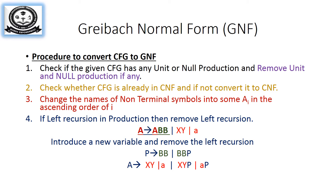Let us see the procedure to convert a context-free grammar into Greibach Normal Form. There are four steps. The first step is the given context-free grammar must be free of null productions and unit productions — if it has either, we must remove them. The second step is to check whether the given CFG is in Chomsky Normal Form (CNF); if not, we must convert it into CNF. In a previous video, I explained how to remove unit productions, null productions, and how to convert a CFG into CNF.